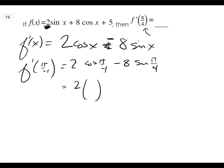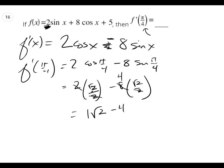So I've got 2 cosine of pi over 4, minus 8 sine of pi over 4. What is cosine of pi over 4? Root 2 over 2. What is sine of pi over 4? Root 2 over 2. 2 goes into 2 — that cancels. 2 goes into 8 — gives 4. So we have root 2 minus 4 root 2. That's like saying 1x minus 4x, which is negative 3x. So the answer is negative 3 root 2.